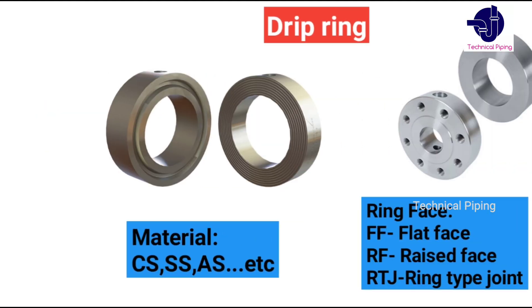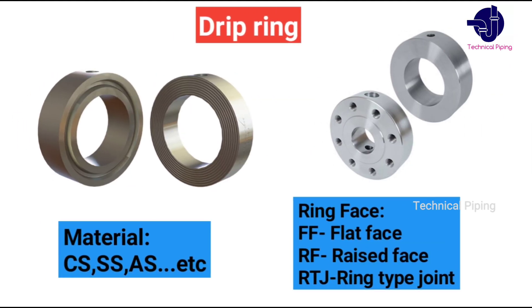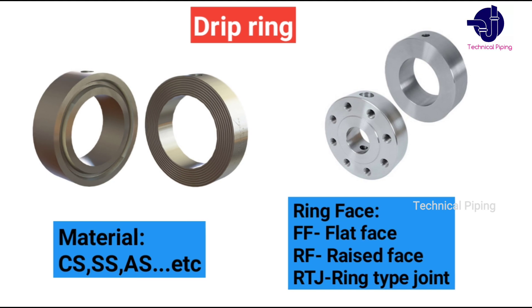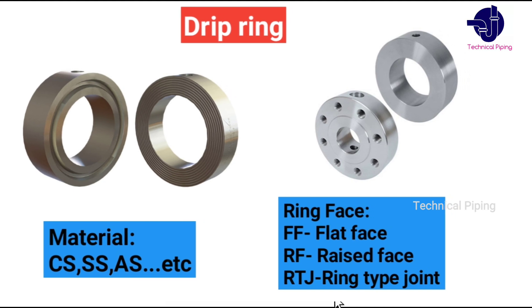Rings are available in the market with different types of material, like carbon steel, stainless steel, alloy steel, and others. You can select based on your needs.